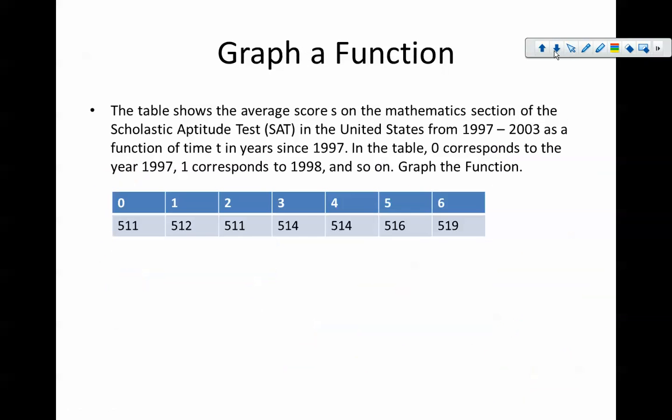Otherwise, let's just look at this last example we have here. The table shows the average scores on the mathematics section of the Scholastic Aptitude Test (SAT) in the United States from 1997 to 2003 as a function of time in years since 1997. In the table, 0 corresponds to the year 1997, 1 corresponds to 1998, and so on.